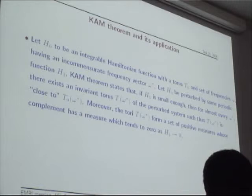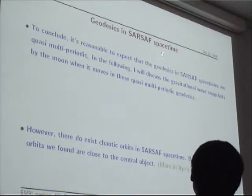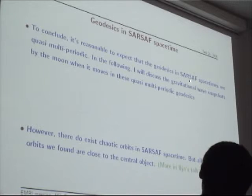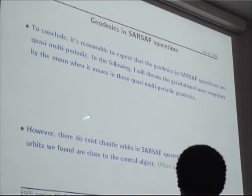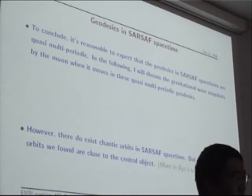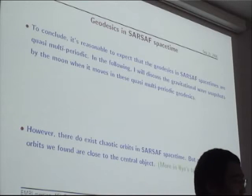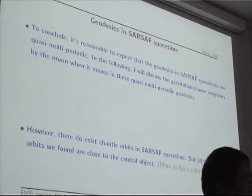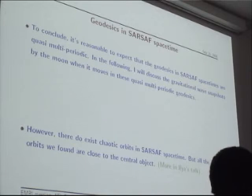The bottom line is that in this stationary, axisymmetric, equatorial-reflection-symmetric, asymptotically flat spacetime, most orbits are quasi-multiperiodic. However, there are some chaotic orbits. Numerical experiments by Mandel, Gair, and others have found that in the relevant band, when the radius is about 8M or 6M, most orbits are quasi-periodic. Only when we go to, for example, r equals 2M can we find some chaotic orbits. So we don't need to worry about chaos in this problem.